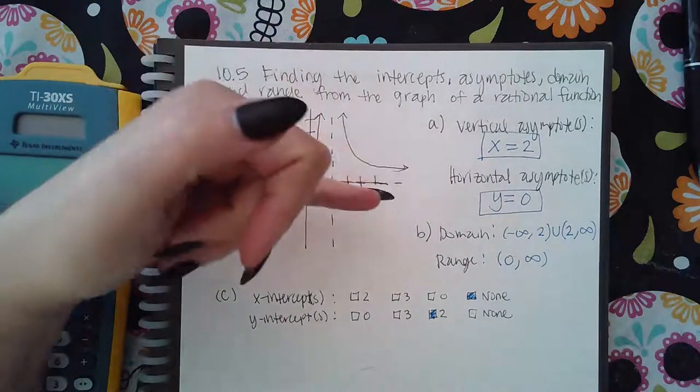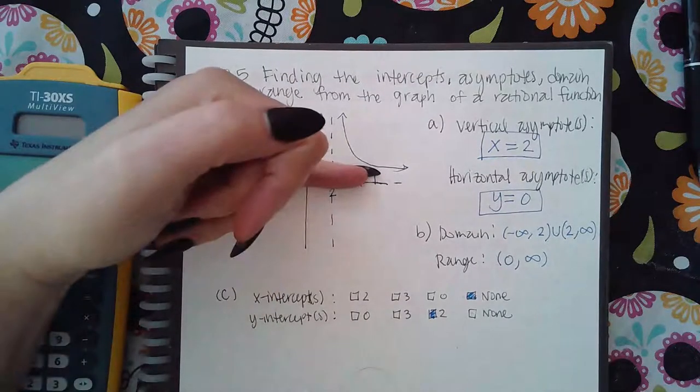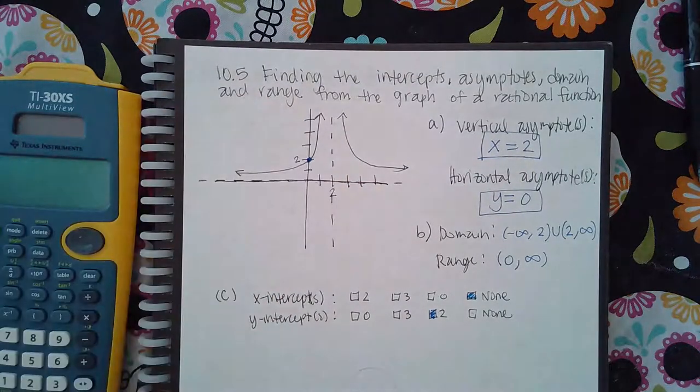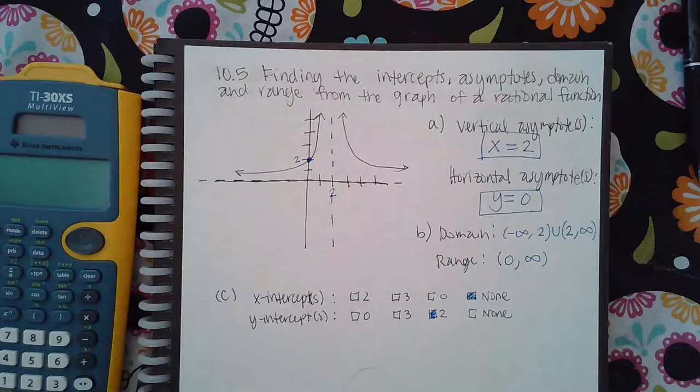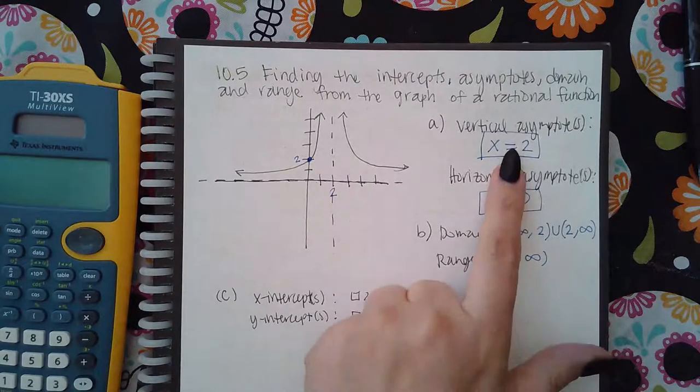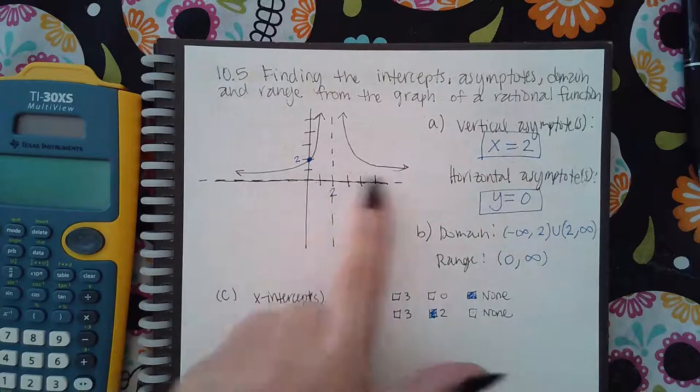And then your domain is always going to be around your vertical asymptotes. So it should be negative infinity to infinity, but it is going to have a break wherever your vertical asymptotes are.